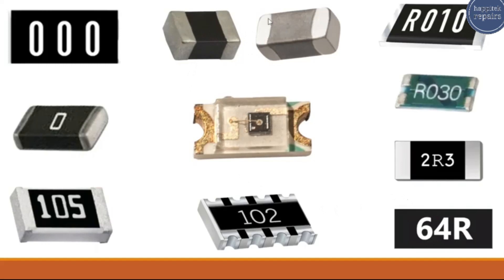This is a thermistor resistor. This kind of resistor depends on temperature — its resistance changes depending on temperature. Over here, this is a photo resistor. Its resistance changes in accordance with the level of light.